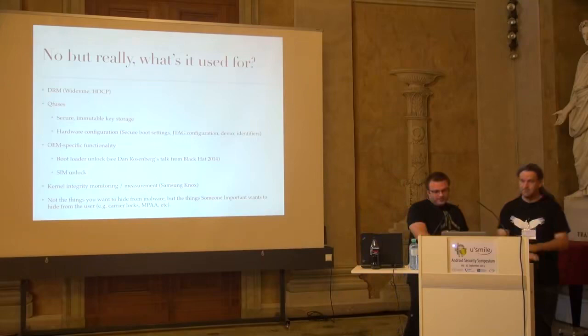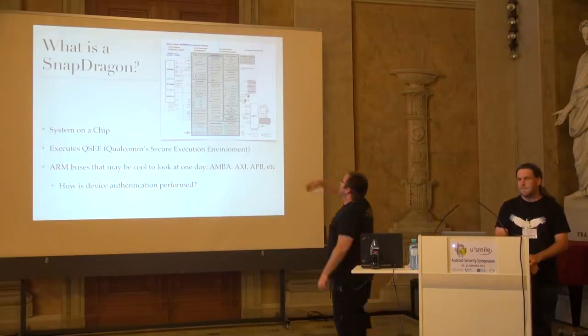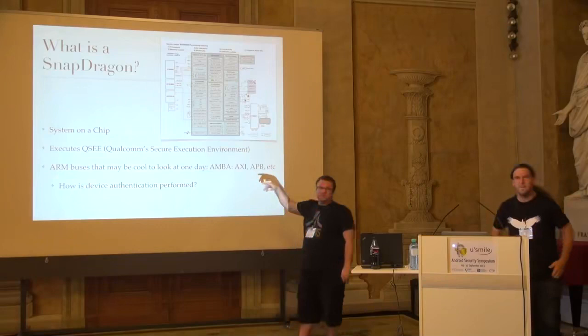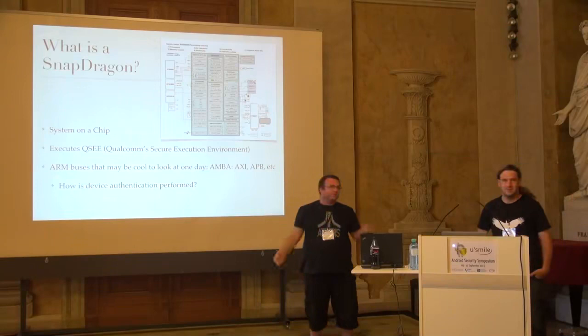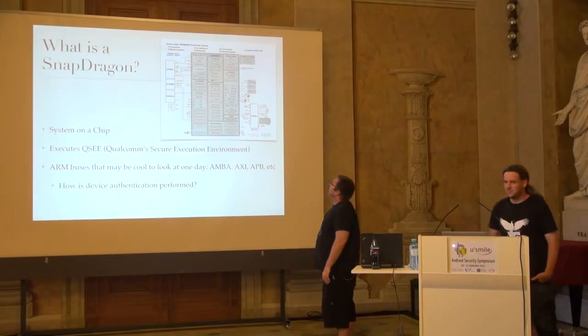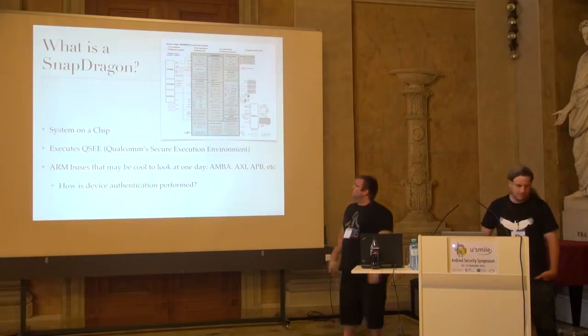Samsung Knox, which would be a whole talk on itself, is also relying heavily on this. This picture - the Qualcomm layout for what is in the 8960 - does anyone have a Samsung or Motorola phone made in the past two years? That's the SoC. It's what's running in your pocket right now. You have four cores, a whole bunch of memory, a lot of peripherals, all in one nice little chip.